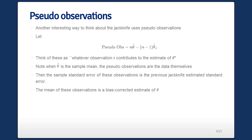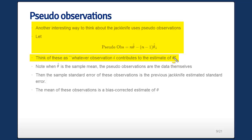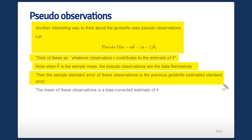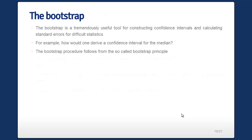People have taken the result that the jackknife fails in these highly specific instances and condemned it as a procedure as a whole, which is maybe a little unfair because it's a pretty quick little thing to do. There's another way to think about the jackknife in terms of so-called pseudo-observations. You can think of these as whatever observation i contributes to the estimate of theta. When theta is the sample mean, the pseudo-observations turn out to be the data themselves. The sample standard error of these pseudo-observations is the estimated standard error from the jackknife, and their mean is a bias-corrected estimate of theta.